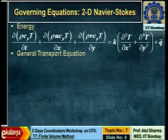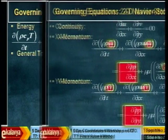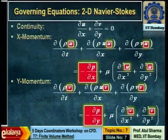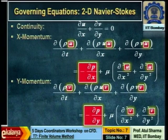You are done with three variables. The fourth variable is pressure. Which is the equation for pressure? You are left with one equation you have not used and one variable left. So, the continuity equation will serve as the equation for pressure.